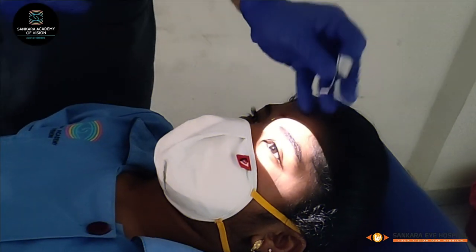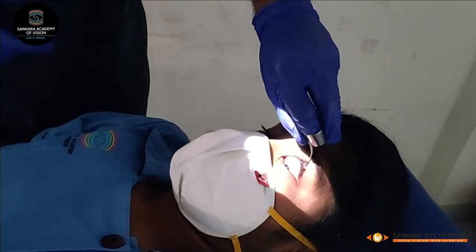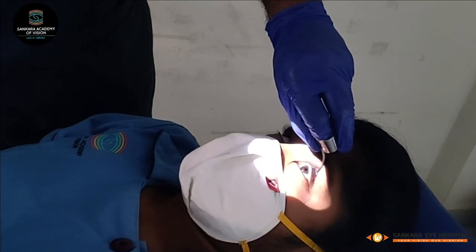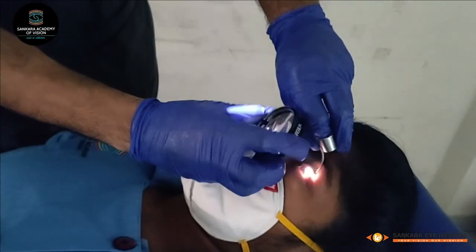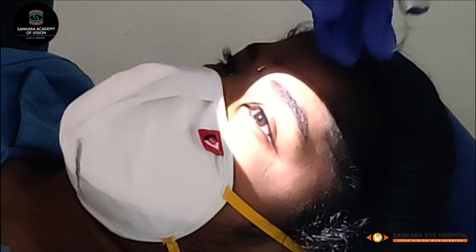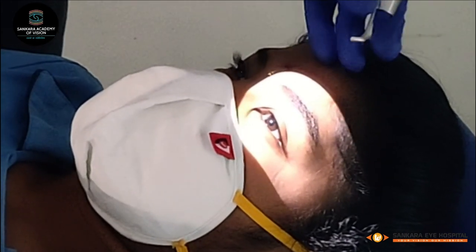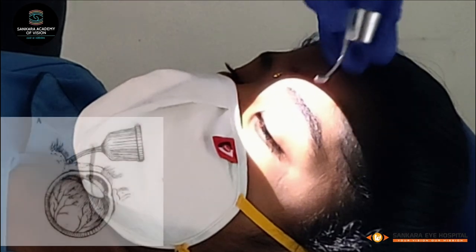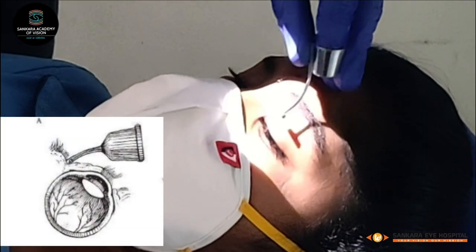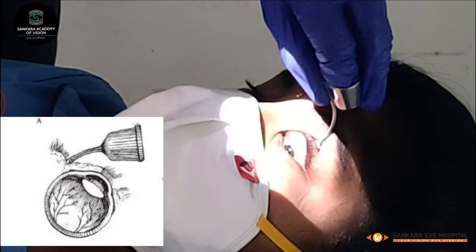Scleral indentation is an important technique for the examination of peripheral retina. The two key principles to observe are appropriate placement of the indenter and to indent in the correct direction. To position your scleral indenter, first ask the patient to look in the direction of gaze that is opposite to the area that you want to indent. Then place the indenter in the skin crease and gently slide it backwards over the globe.